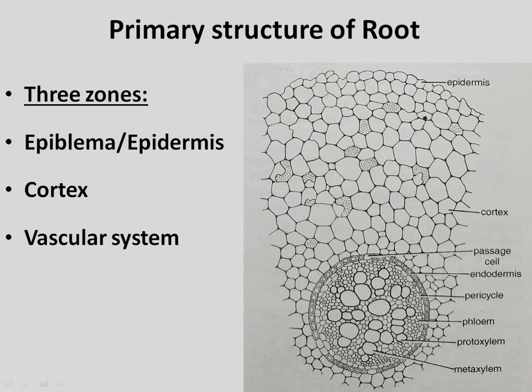The first zone is Epidermis, which is the outermost layer. The second is Cortex, which is the middle zone usually made of parenchyma cells, and the third is the Vascular System.